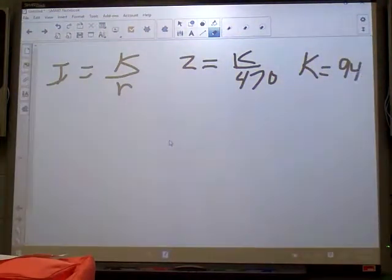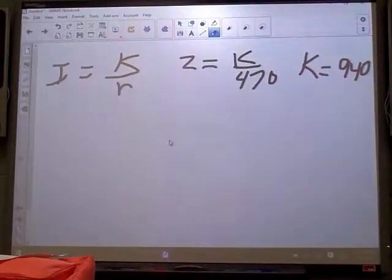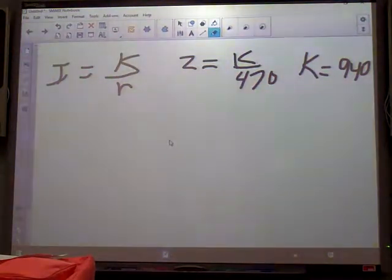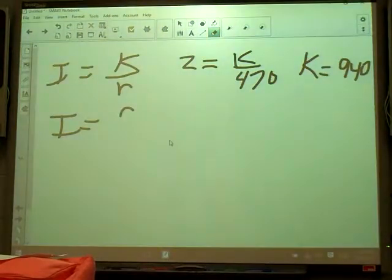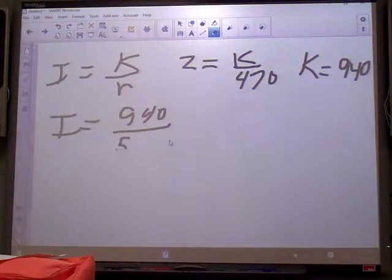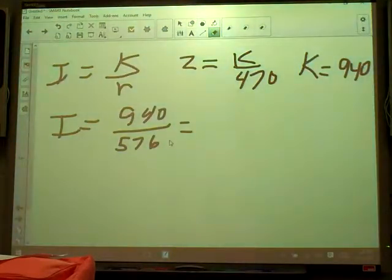Now we're gonna use that to figure out some stuff in the next sentence. What's the current when the resistance is 576? So we'll say current is equal to 940 divided by 576. And I got about 1.7.